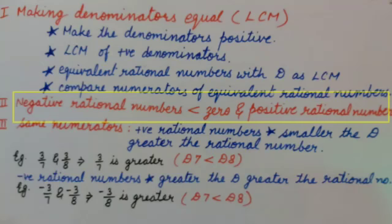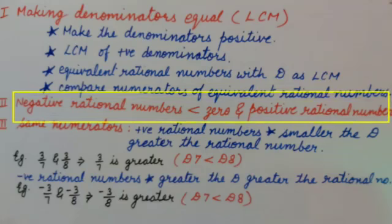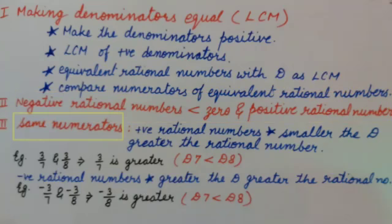The second method is used when we are comparing a negative and positive rational number, or negative or positive rational numbers with zero. Directly we can say negative rational numbers are smaller than zero and positive rational numbers. We need not calculate.